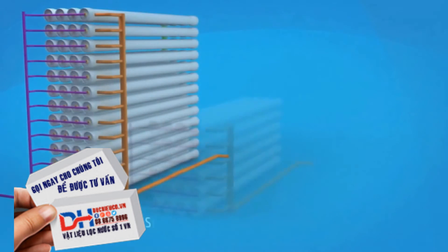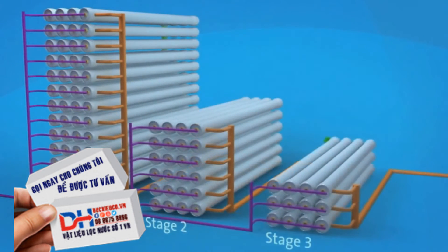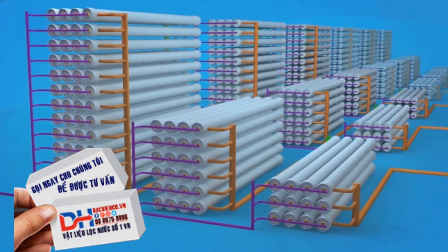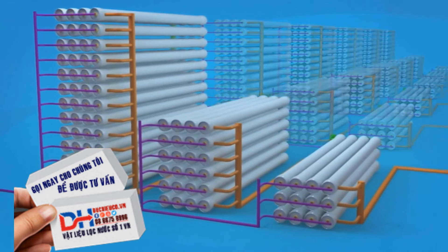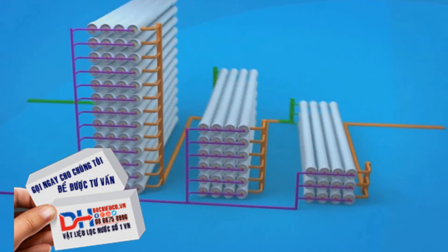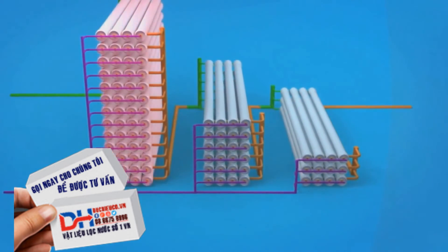At St. Mary's, there are six reverse osmosis treatment trains, each with three stages. This design produces the highest amount of recycled water with reduced concentrate waste. Stage 1 has 52 pressure vessels, Stage 2 has 24 pressure vessels, and Stage 3 has 12 pressure vessels.